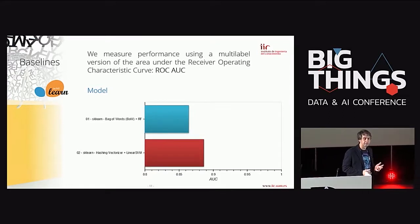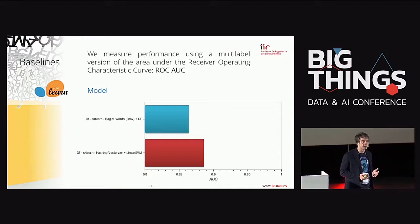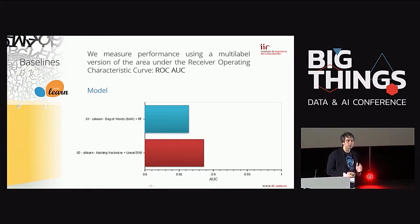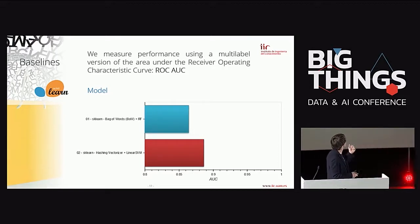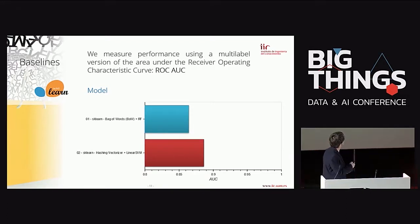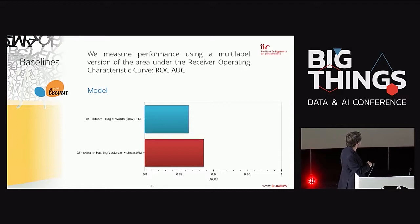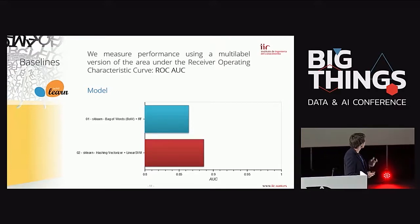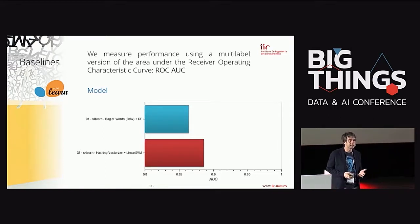This problem is fortunately very unbalanced — most comments on the internet are non-toxic — so we can't use accuracy as a metric; it would be biased toward the negative class. Instead we measure the area under the ROC curve. The simple bag-of-words method gives about 86% AUC, and the hashing vectorizer that takes into account word pairs and triplets works a little better.